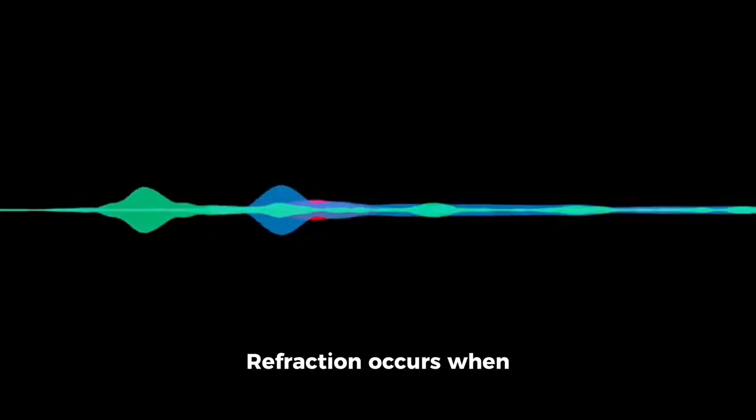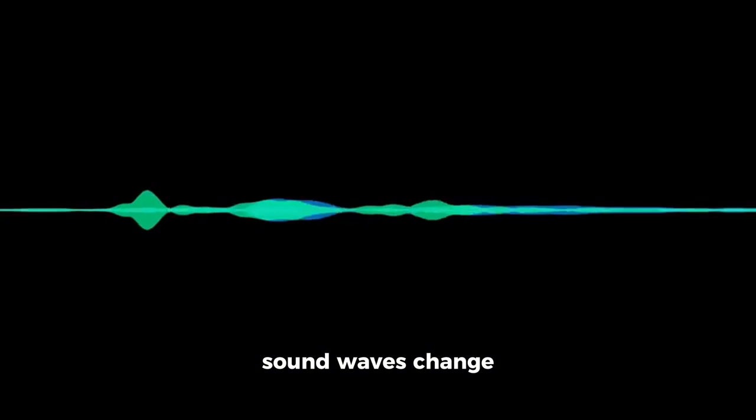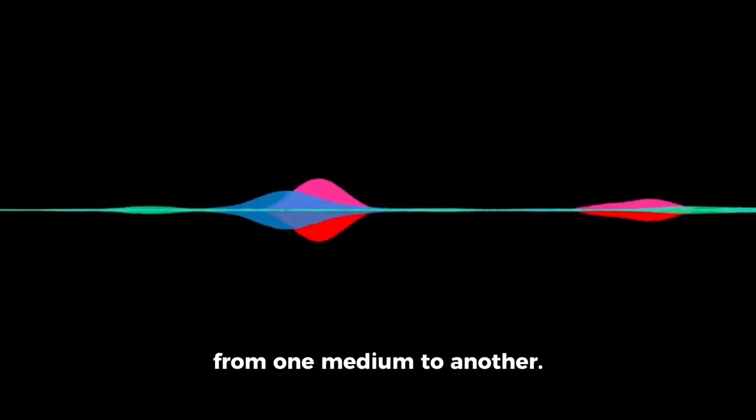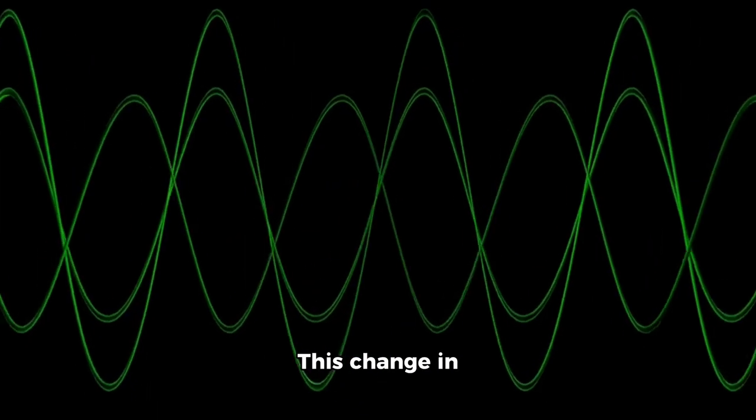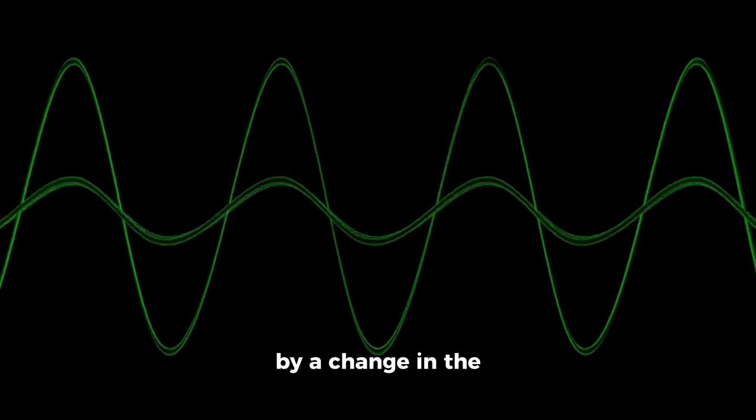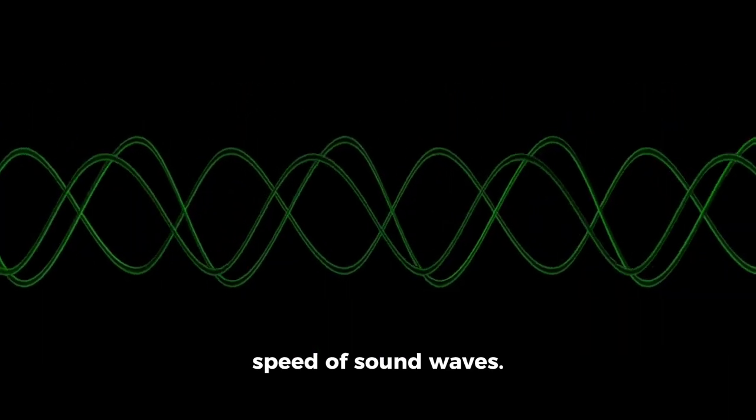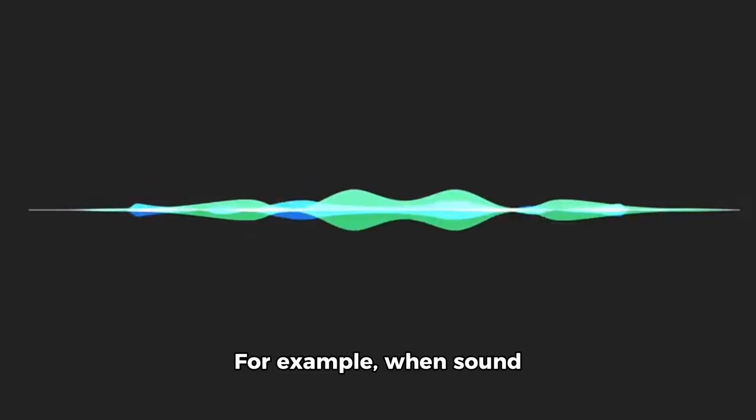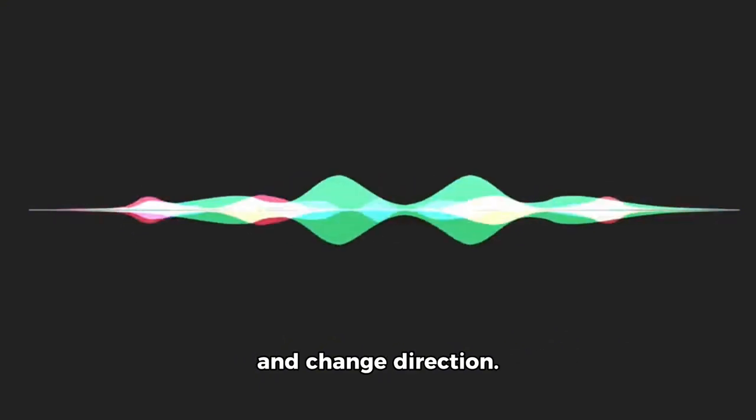Refraction. Refraction occurs when sound waves change direction as they pass from one medium to another. This change in direction is caused by a change in the speed of sound waves. For example, when sound waves pass from air to water, they can refract and change direction.